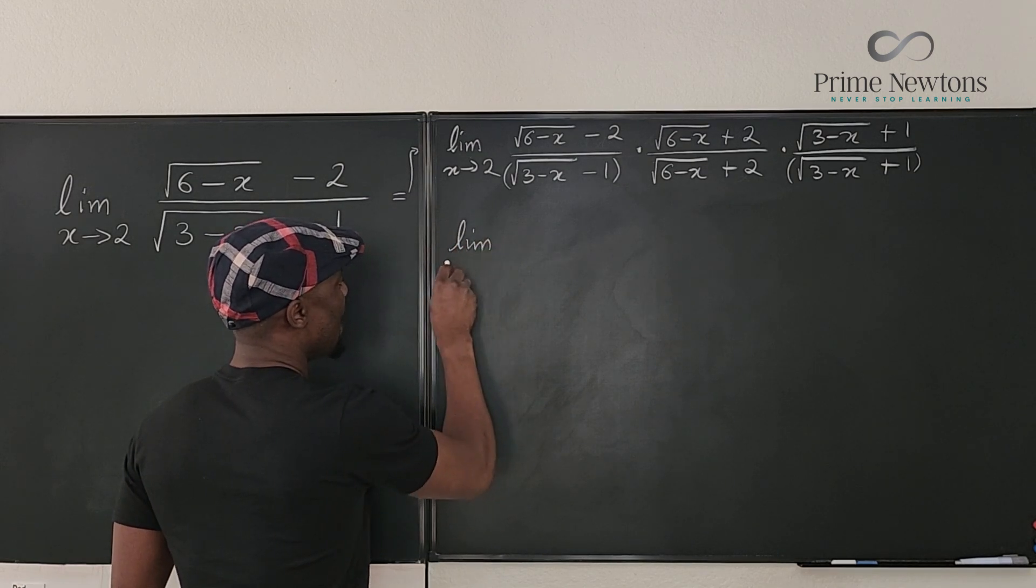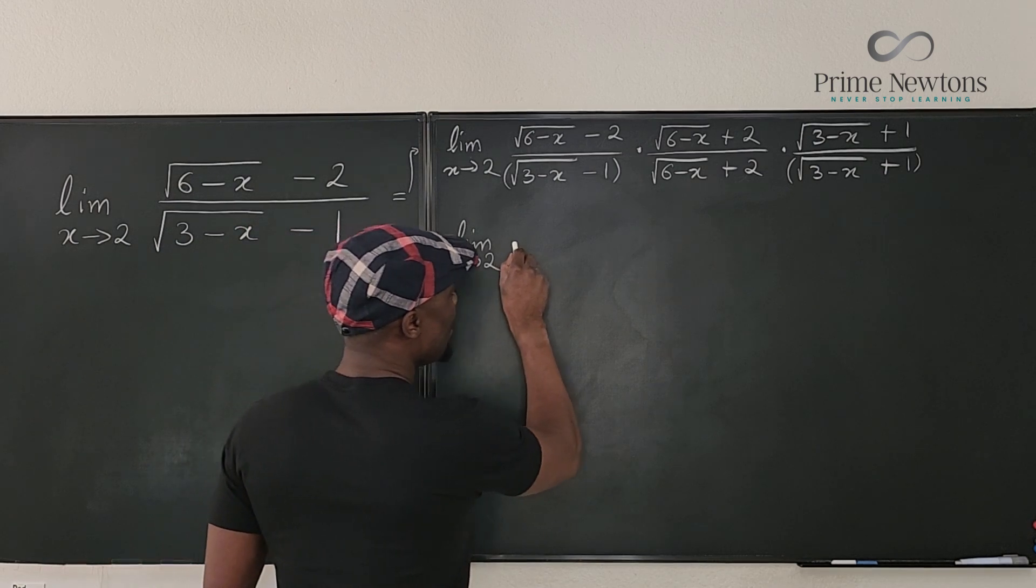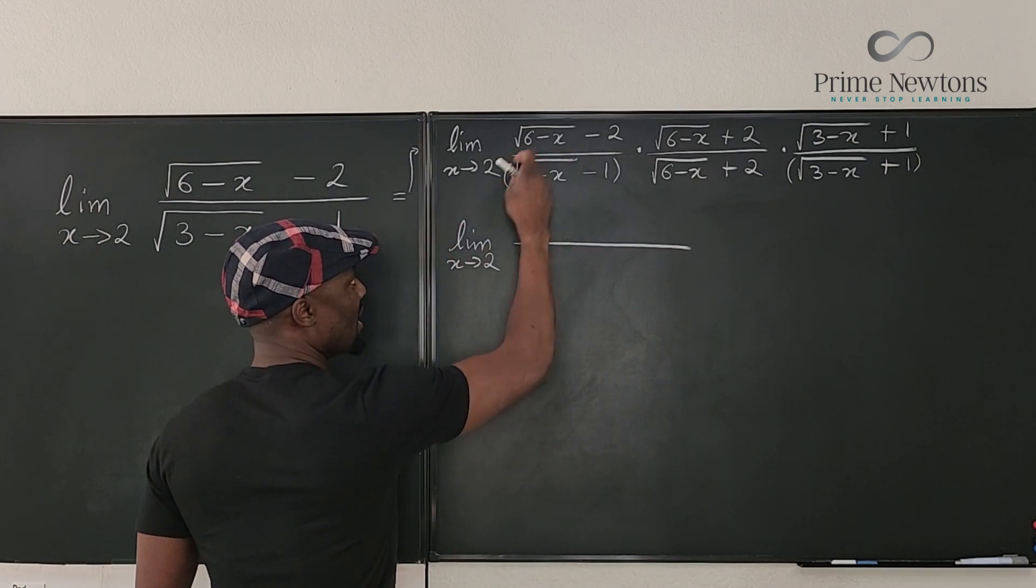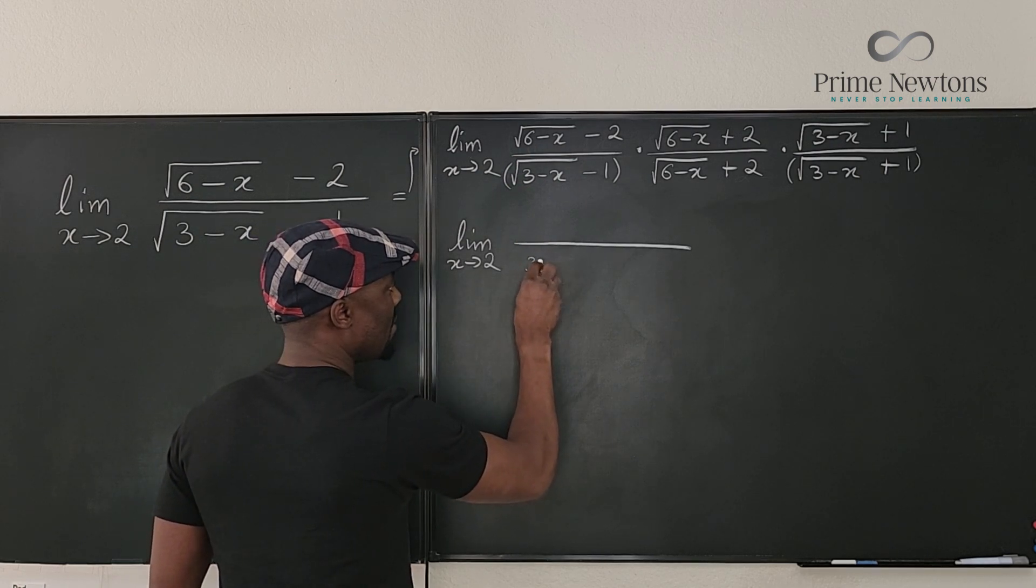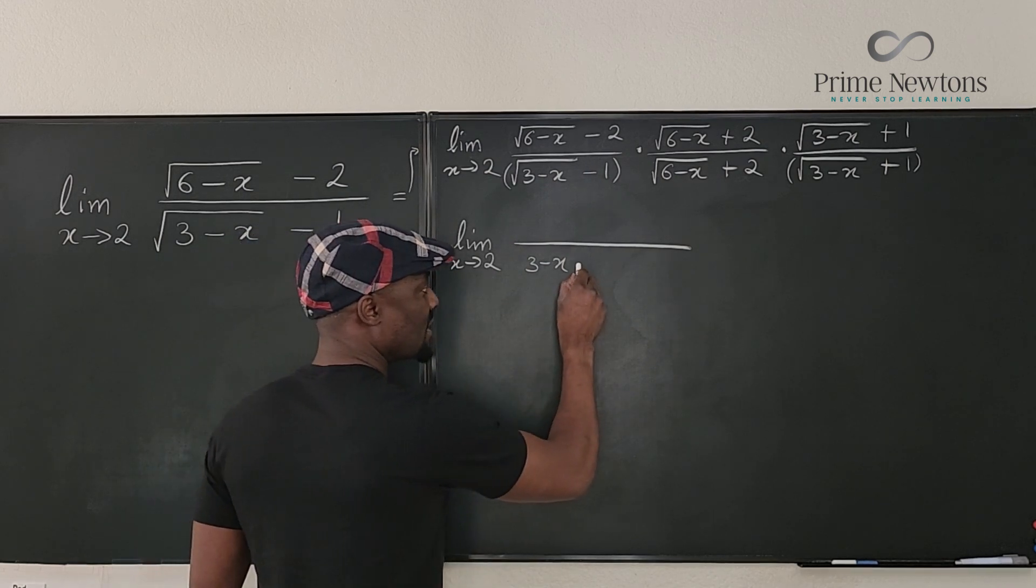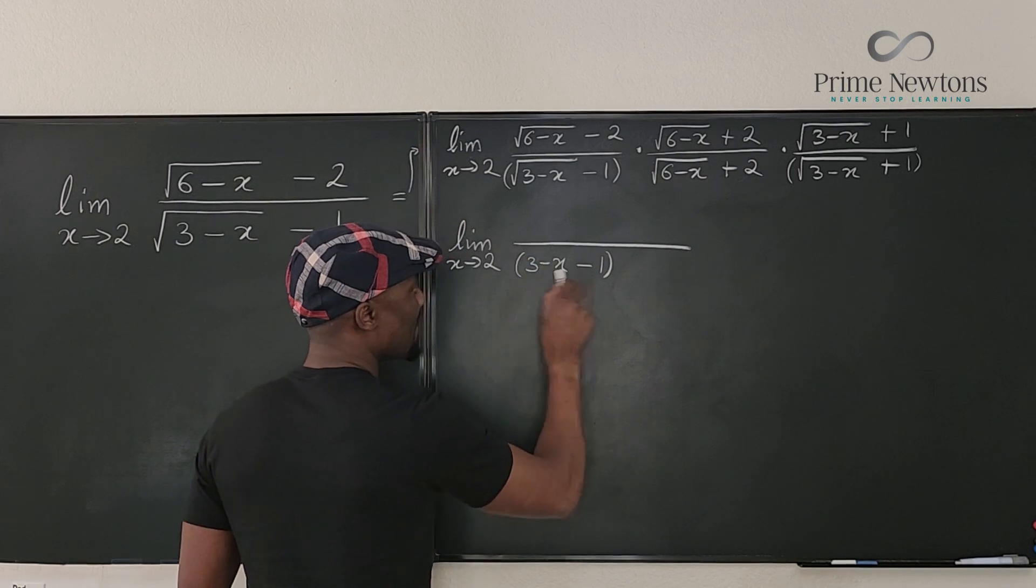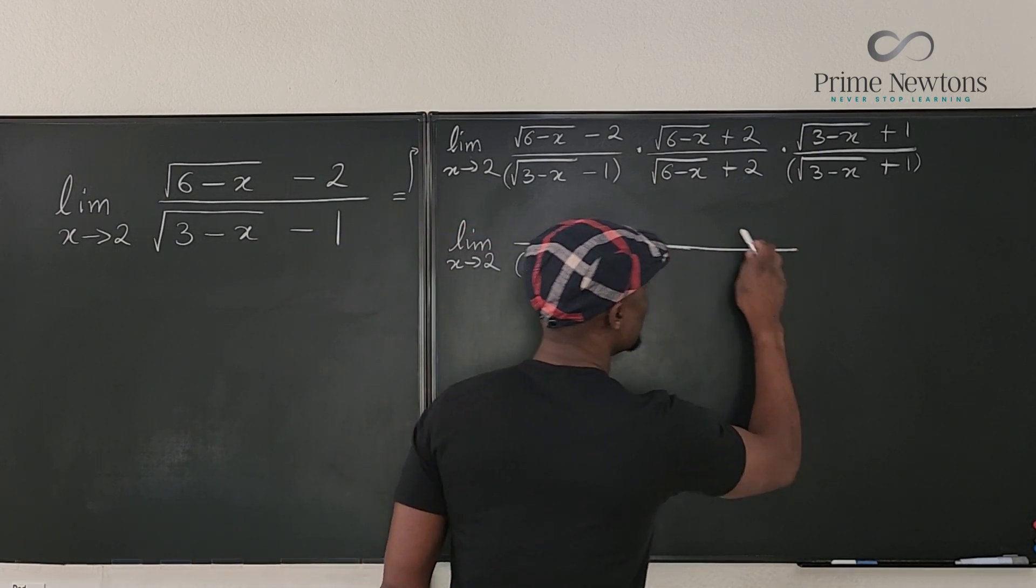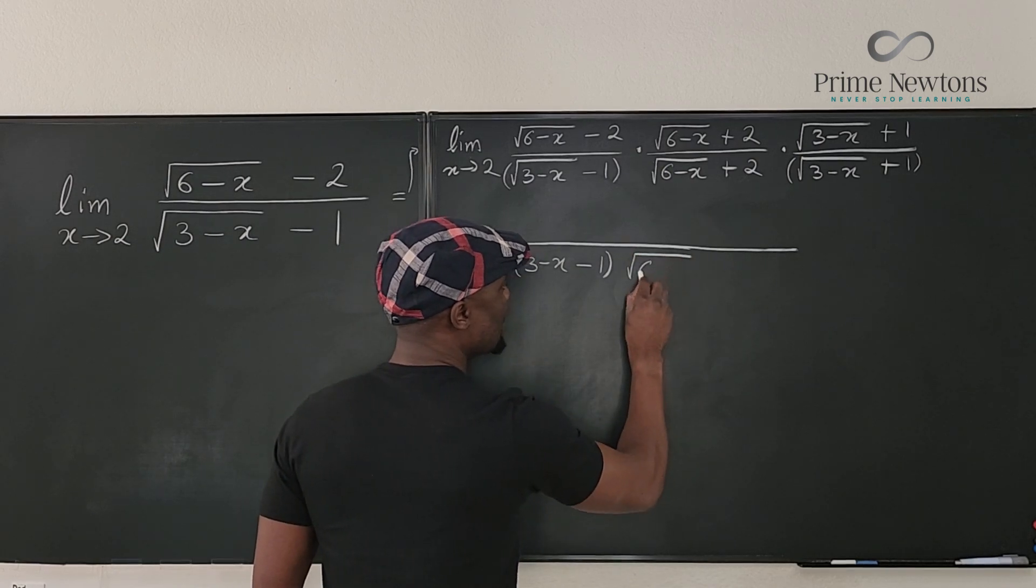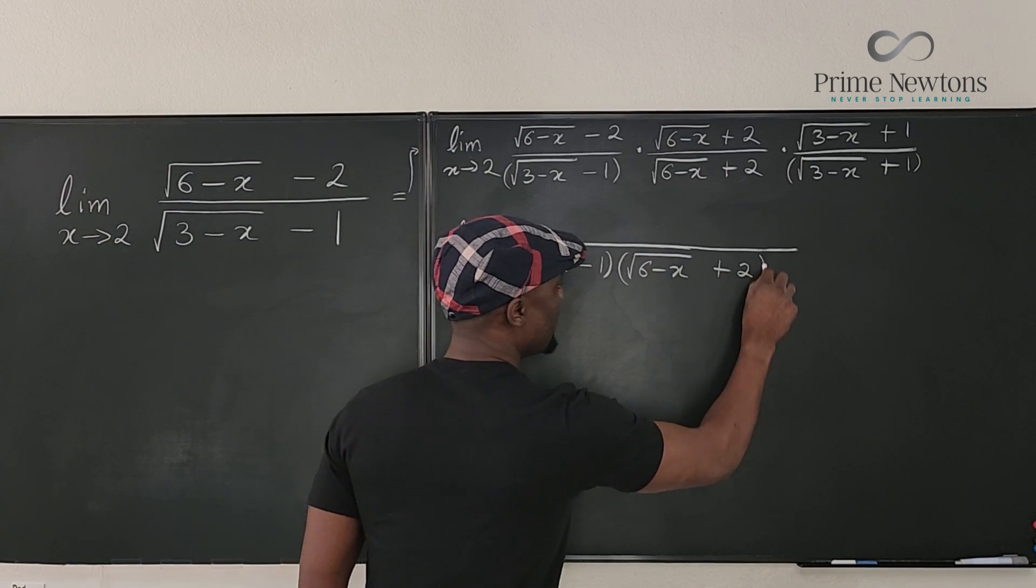So this is the limit as x goes to 2 of, in the denominator, you're going to have the square of this expression, which is just going to be 3 minus x. And you're going to have the square of this, which is going to be 1. So that's minus 1. That's what you have in the denominator. And it has its counterpart, which is this one here, the square root of 6 minus x plus 2. That's what you have down here.